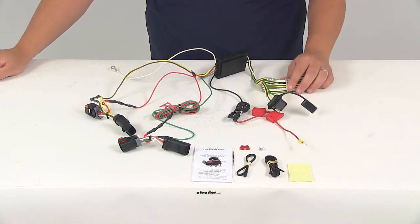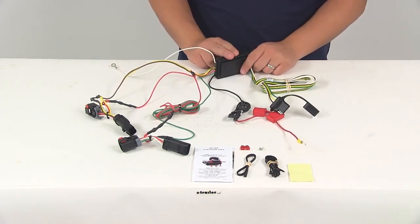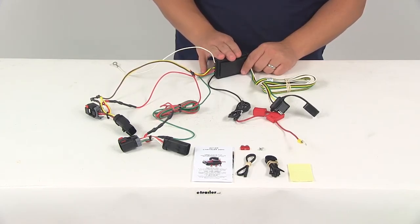This product is going to fit certain years and models of the Chrysler 300. It's going to include your tail light converter. This is going to ensure that your vehicle's wiring matches out of your trailers. The powered module is going to connect directly to the battery to avoid overloading the vehicle's electrical system.